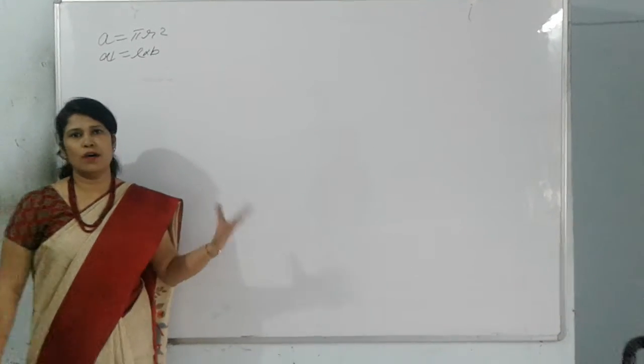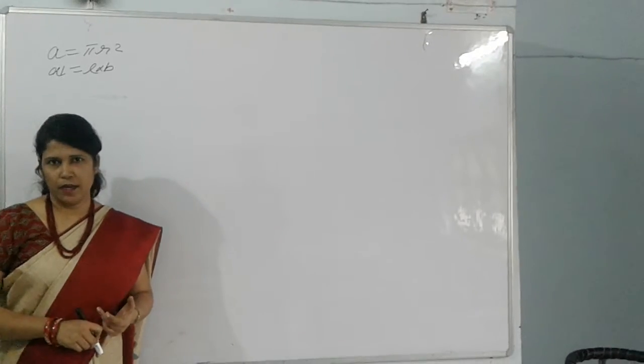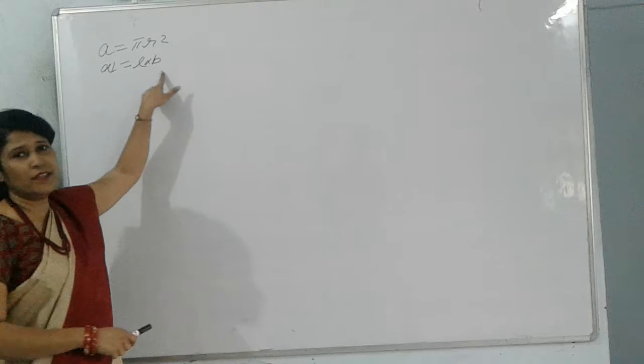Hello students, so today we are going to learn about flowchart to calculate and print area of a circle and area of a rectangle, that is pi r square and length into breadth.